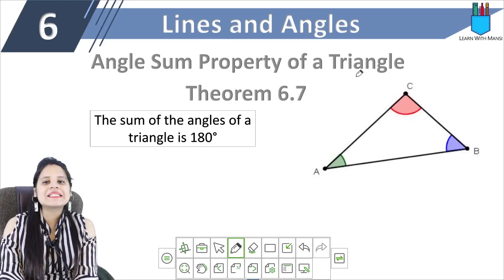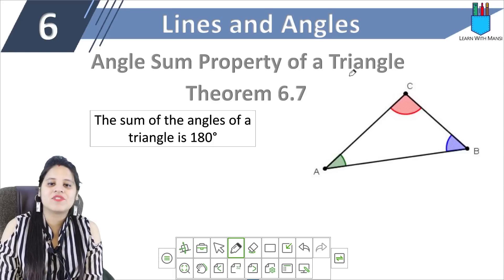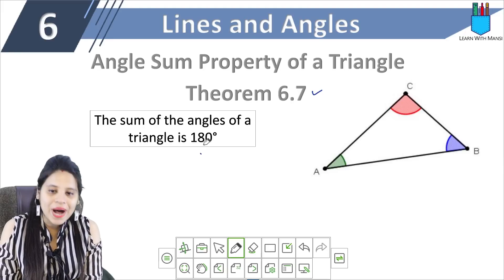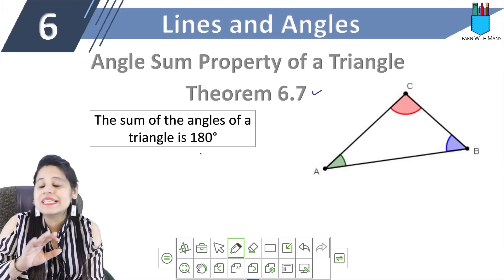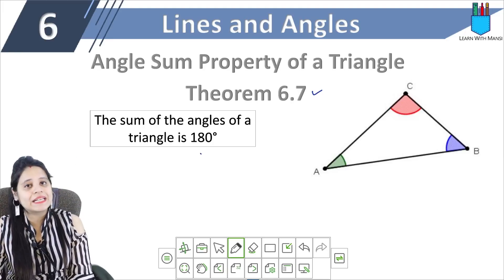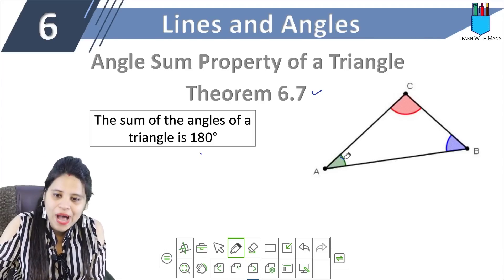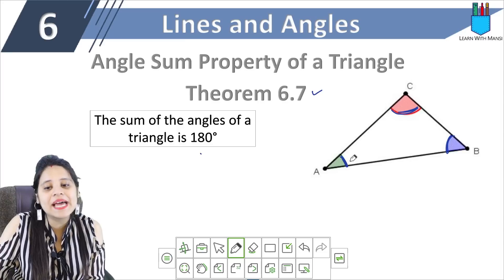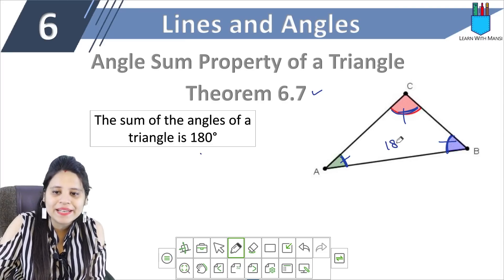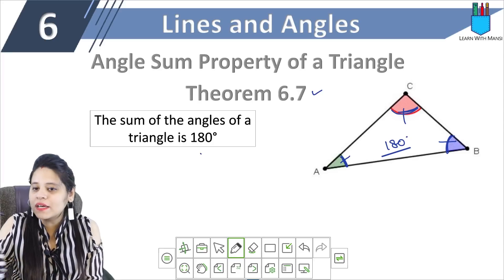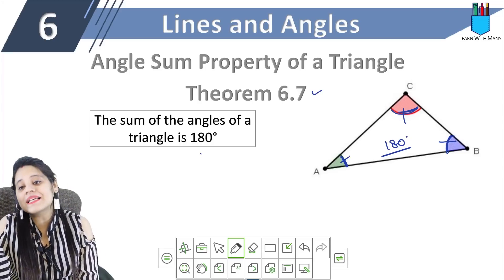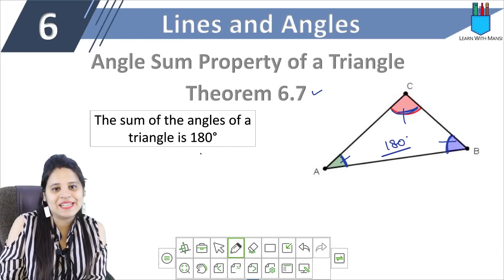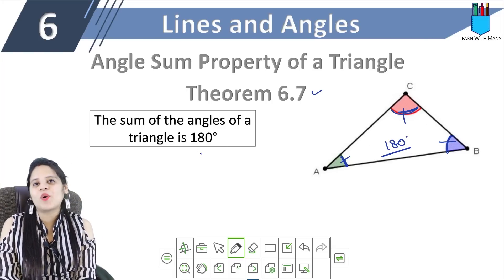Next we have the angle sum property of a triangle, which is Theorem 6.7. The sum of the angles of a triangle is 180 degrees. Any triangle — whether isosceles, scalene, or equilateral — has three angles A, C, and B, and their sum will always be 180 degrees. Whether it is an obtuse-angle triangle, a right-angle triangle, or an acute-angle triangle, the sum will always be 180 degrees. This is the angle sum property of a triangle.